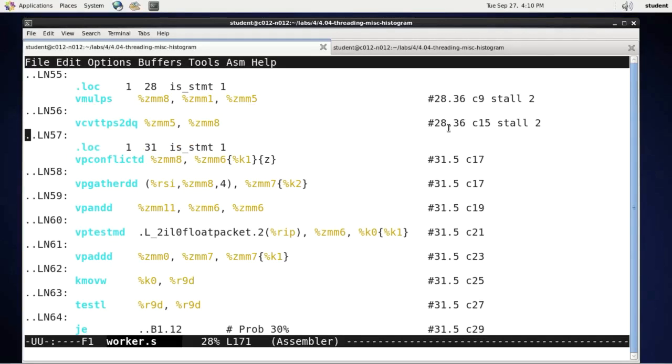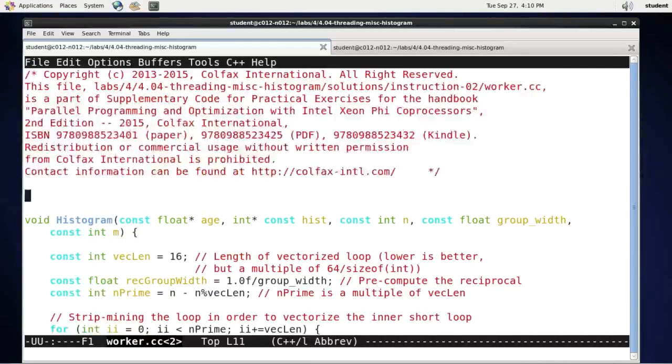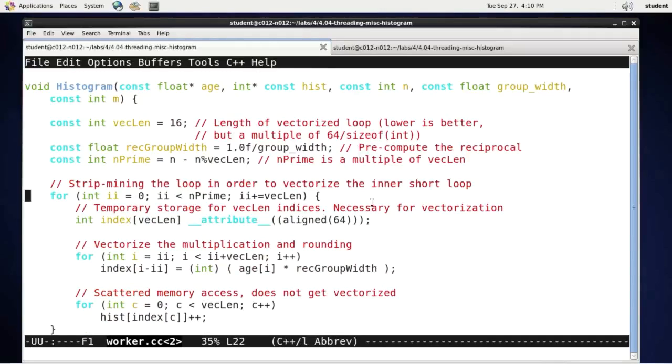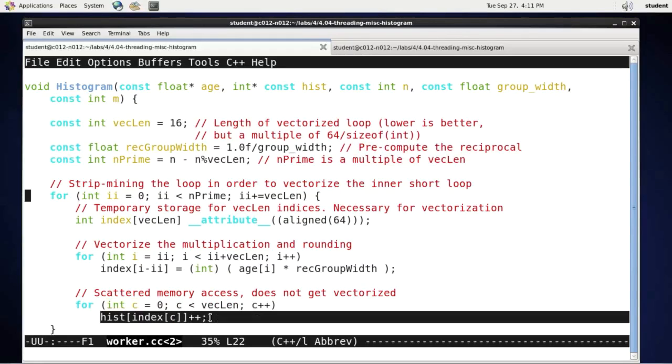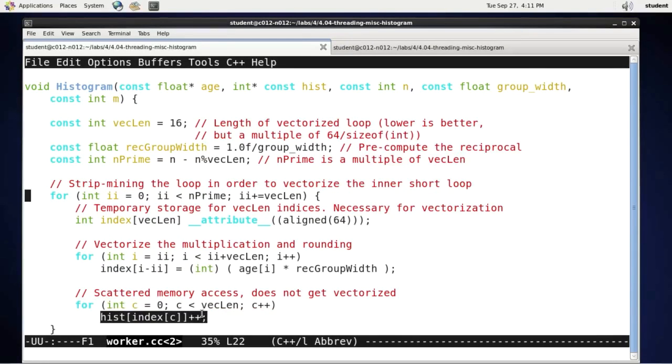If we were compiling for a processor that doesn't have conflict detection instructions, we would still be able to vectorize this loop partially. I have code to show you that illustrates how this would be done. We would have to take the loop and strip mine it - basically express it as two nested loops, one iterating with a stride of 16 and the other operating with a stride of one but with only 16 iterations. In this loop we would do the multiplication and the conversion to integers. Then there will be another loop which cannot get vectorized, and in this loop we would do the histogram increments. So it is still possible to vectorize binning if you don't have conflict detection, but it requires more programming effort.